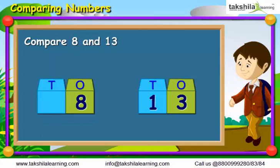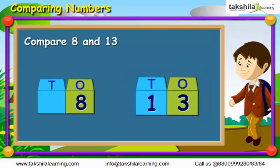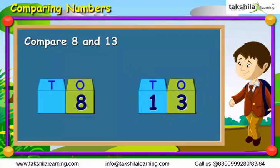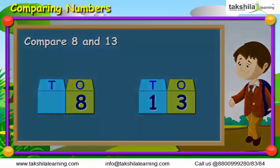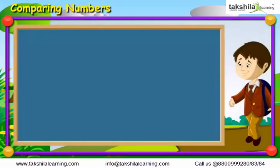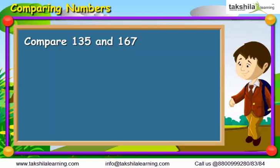Let us recap what we have studied. Both the numbers have an equal number of digits, i.e., 3. So, what should we do in this case?